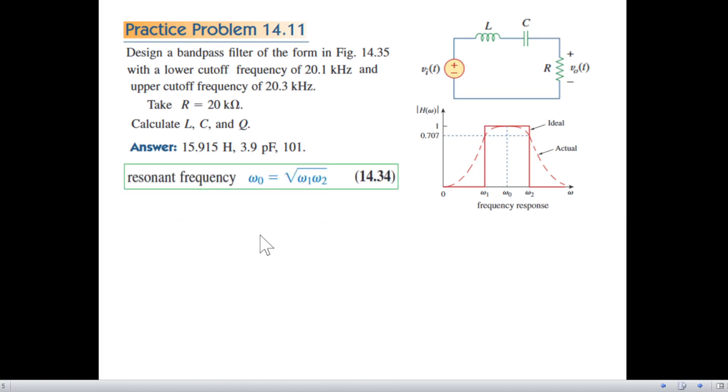Okay, now a couple of formulas that we will now discuss. One is called the resonant frequency. How do we calculate this frequency? Omega naught is just the multiplication of omega 1 and omega 2 under root.